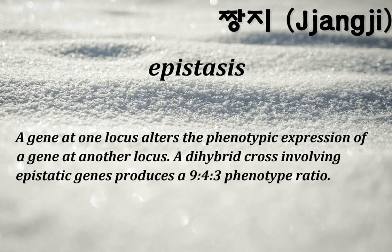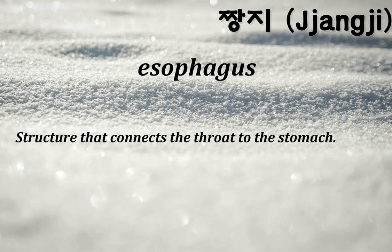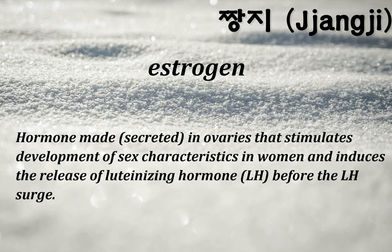Epistasis: a gene at one locus alters the phenotypic expression of a gene at another locus. A dihybrid cross involving epistatic genes produces a 9:4:3 phenotype ratio. Esophageal sphincter: a valve-like trapdoor between the esophagus and the stomach. Esophagus: a structure that connects the throat to the stomach. Estrogen: a hormone secreted in the ovaries that stimulates development of sex characteristics in women and induces the release of luteinizing hormone (LH) before the LH surge.